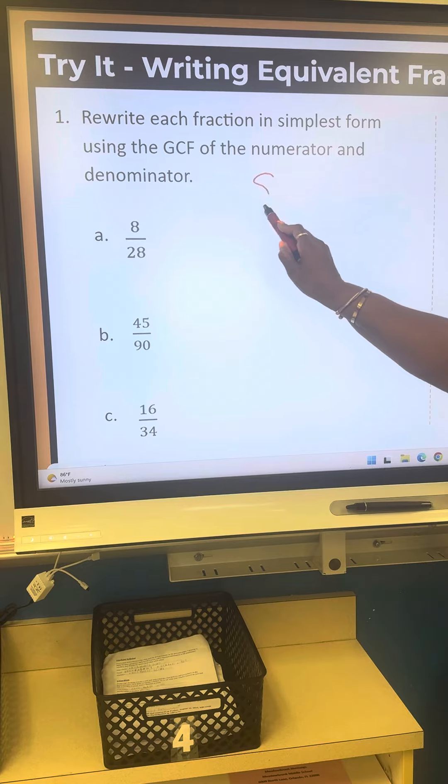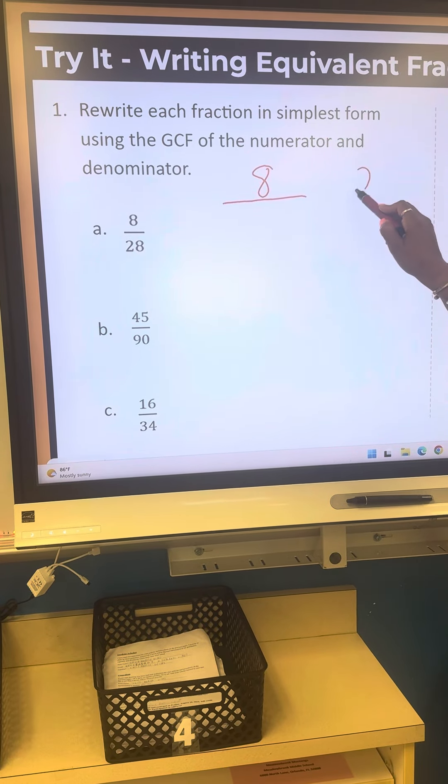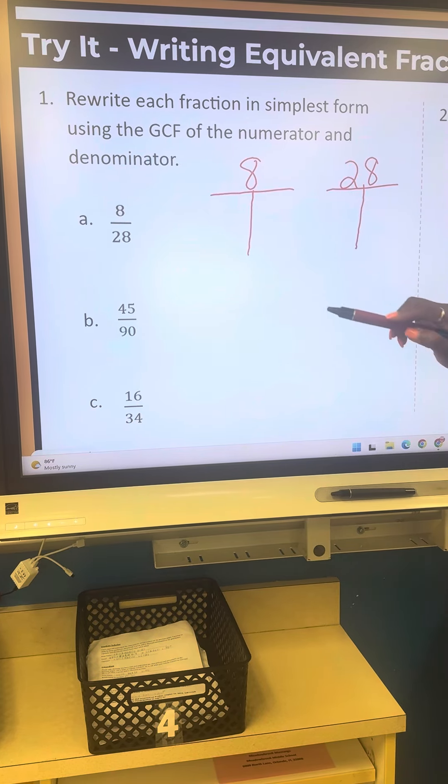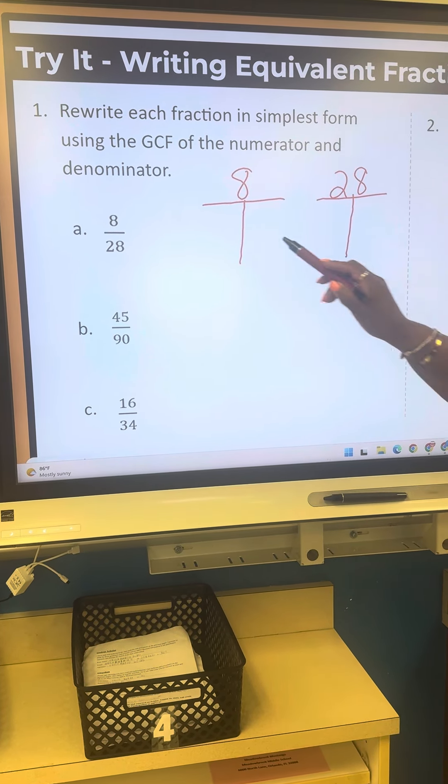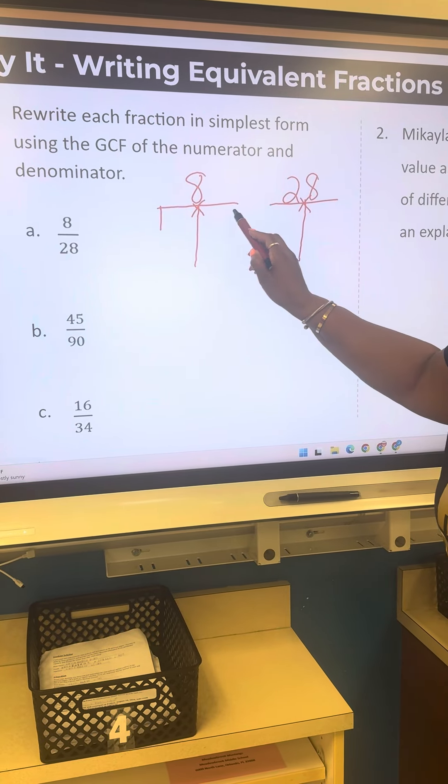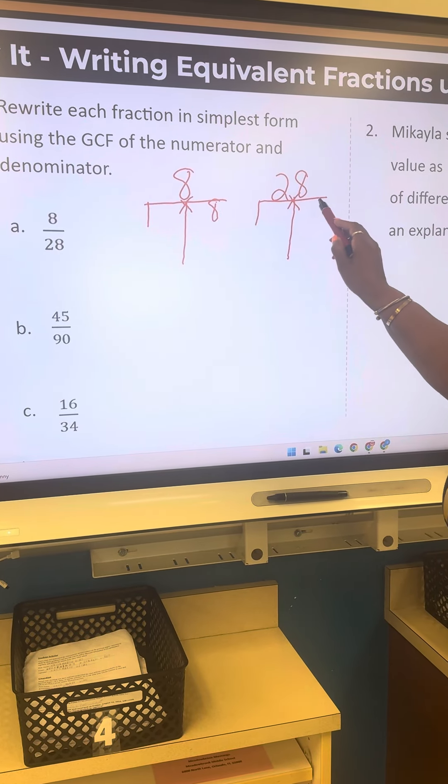So I'm going to do 8 and 28, draw my T-chart underneath, write it on your paper as I'm doing it here, put my multiplication sign. So I have 1 and 8, 1 and 28.